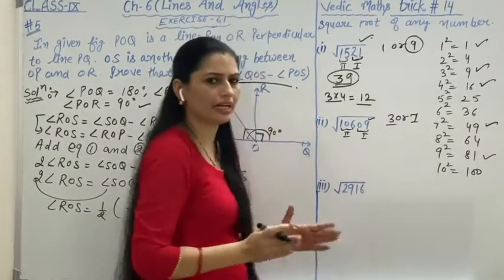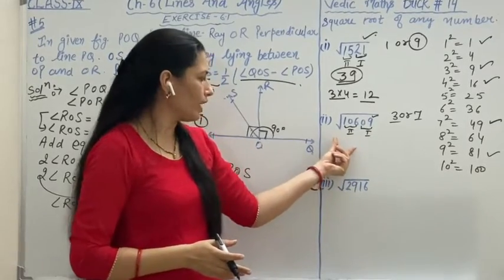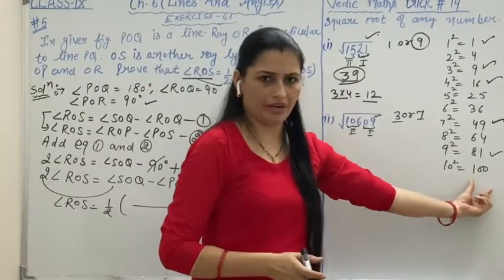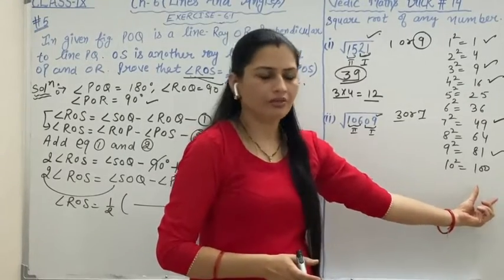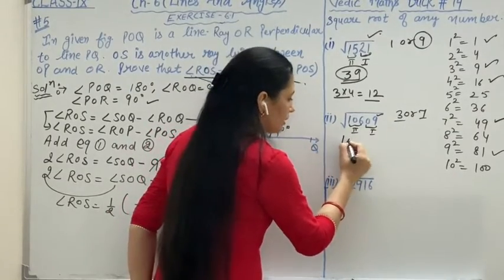So we can here get 3 or 7. Either 3 will come or 7 will come, depending on 106. Below 106 you can write 100, that is 10 squared. That means square root of 100 is 10. So we write here 10.